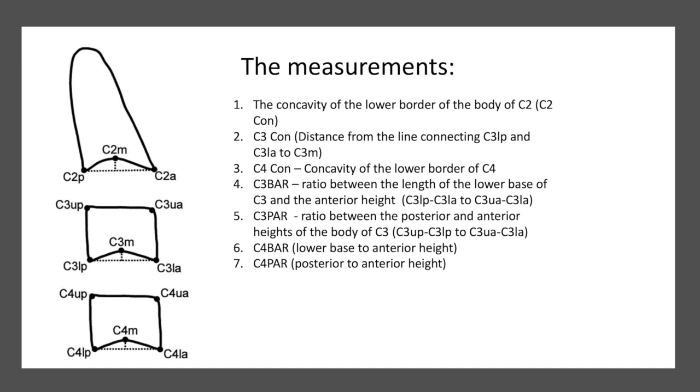The measurements which are used to identify the stages are the following. The concavity of the lower border of the body of C2, which is measured as the longest distance from the line joining C2P, the most posterior point, to the deepest point on the lower surface of the cervical spine. Similarly, there is a C3 concavity, the distance between the line joining C3LP and C3LA to the deepest point on the lower border of the third cervical spine.